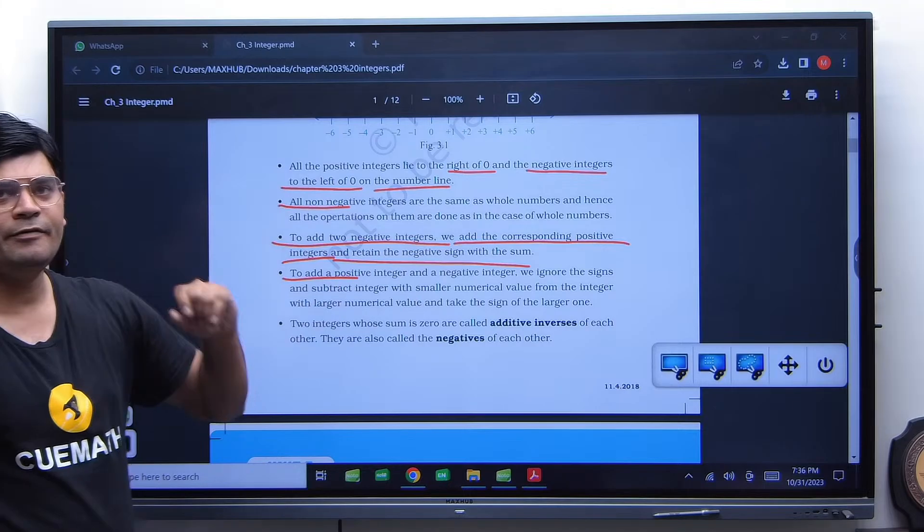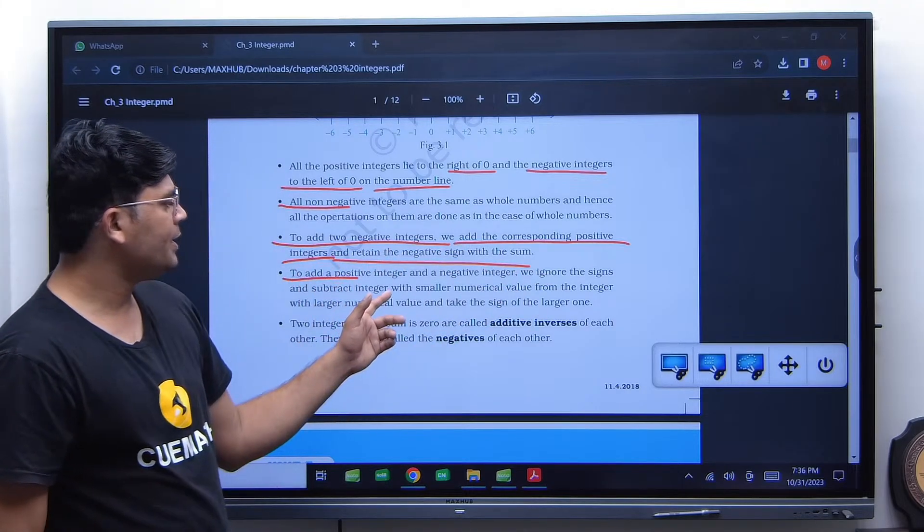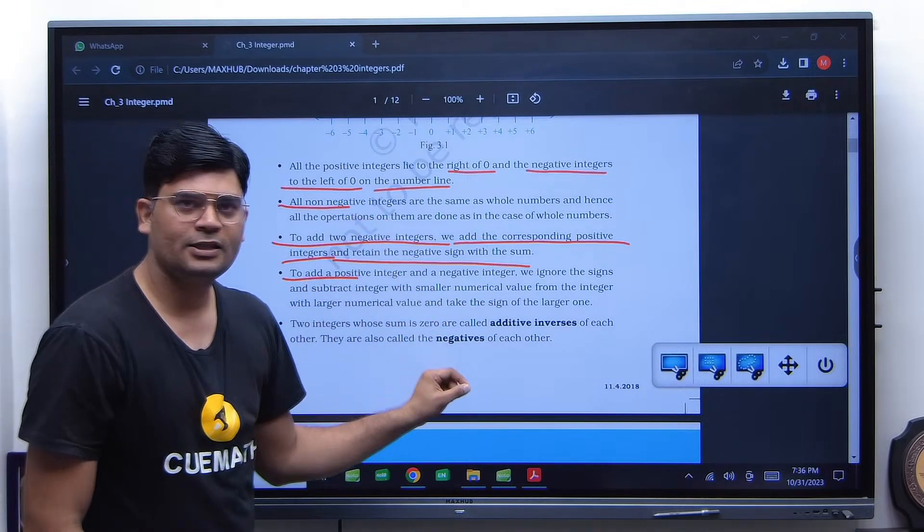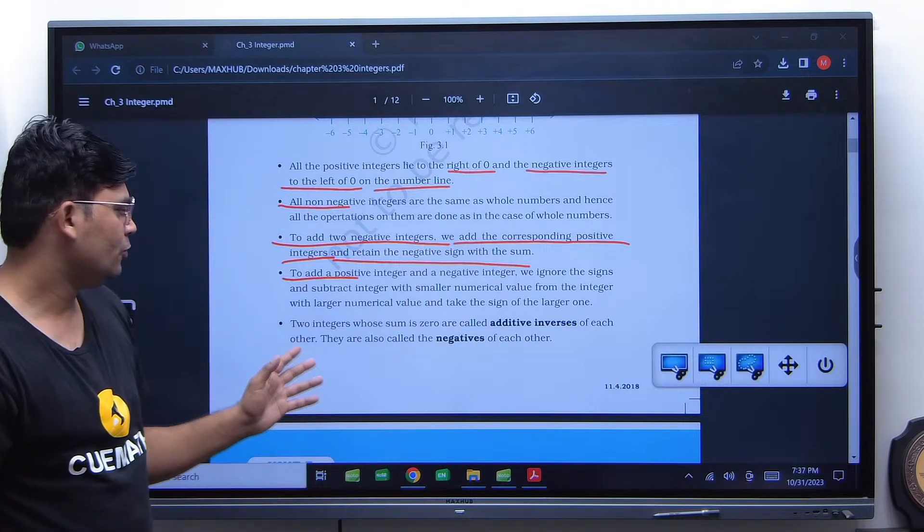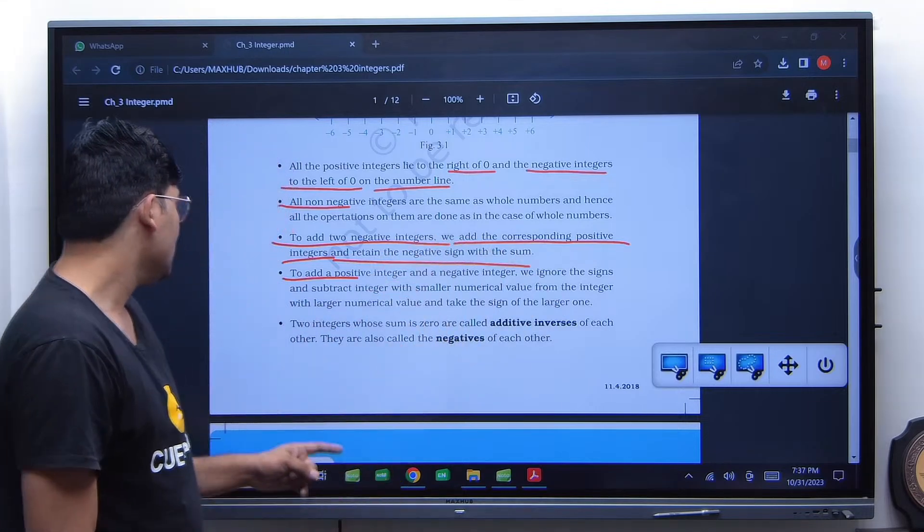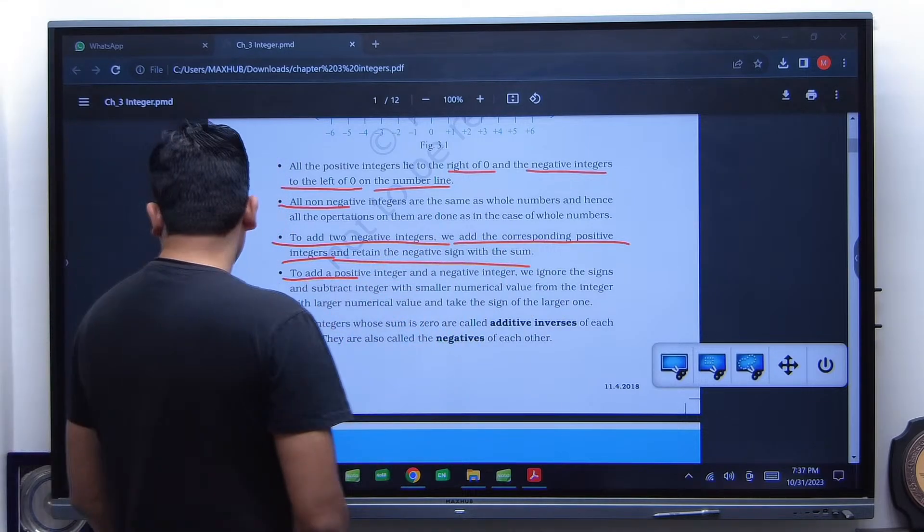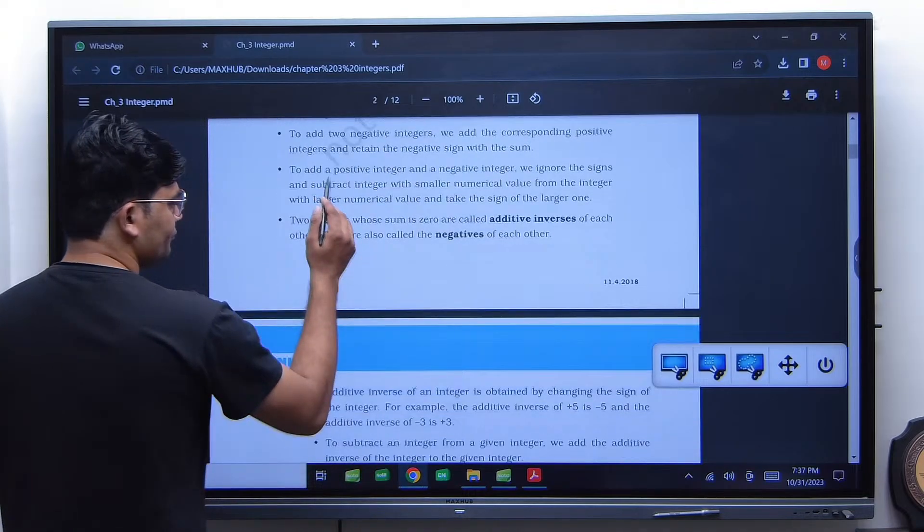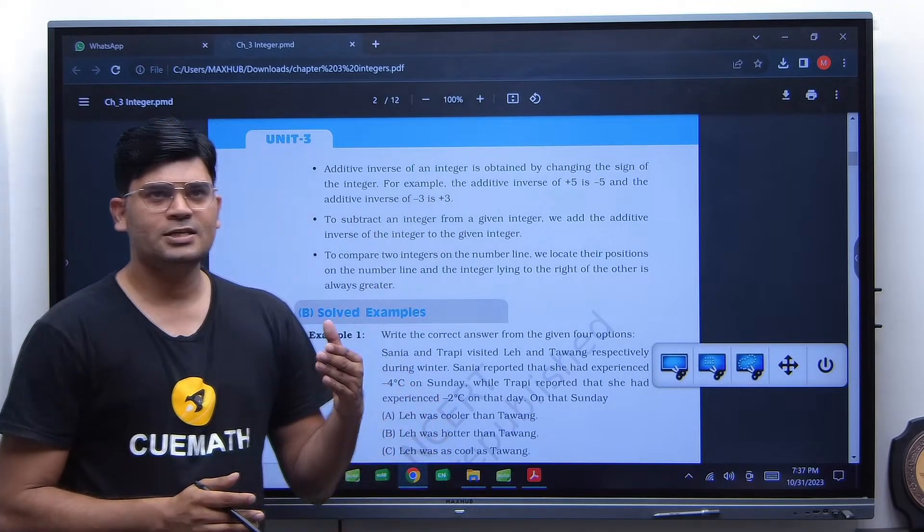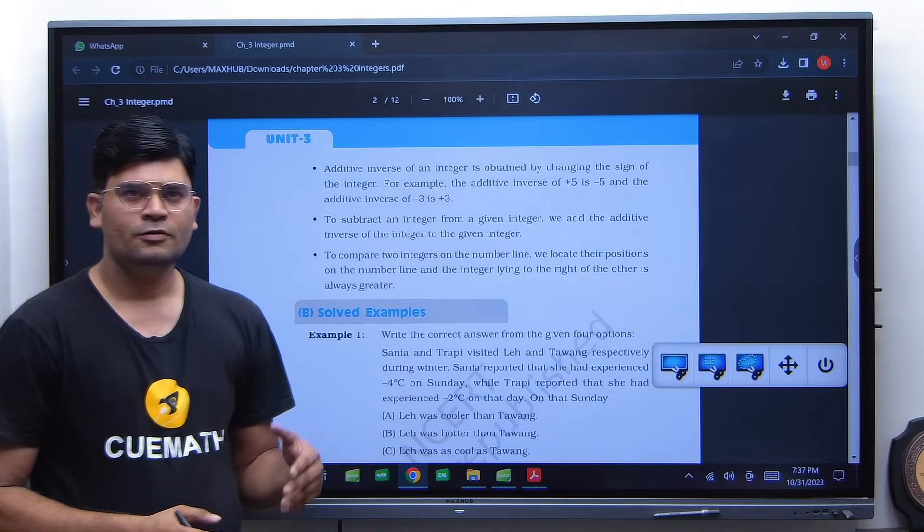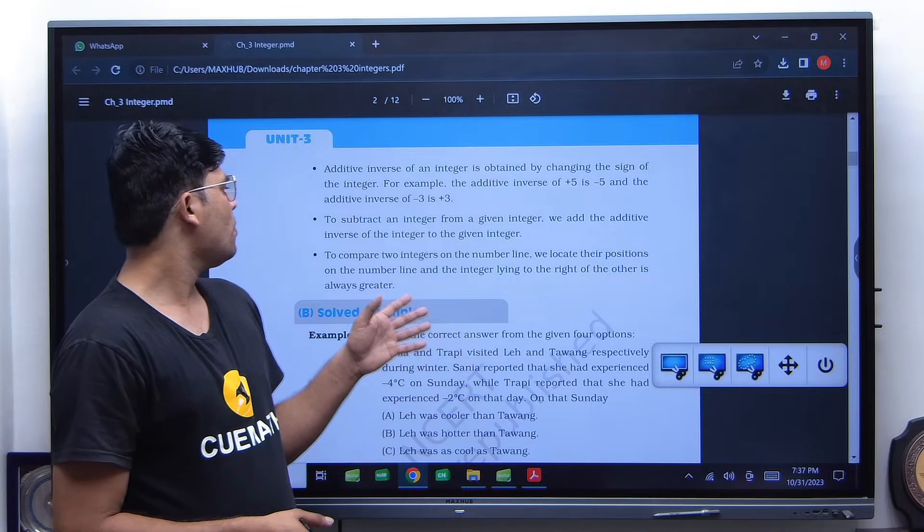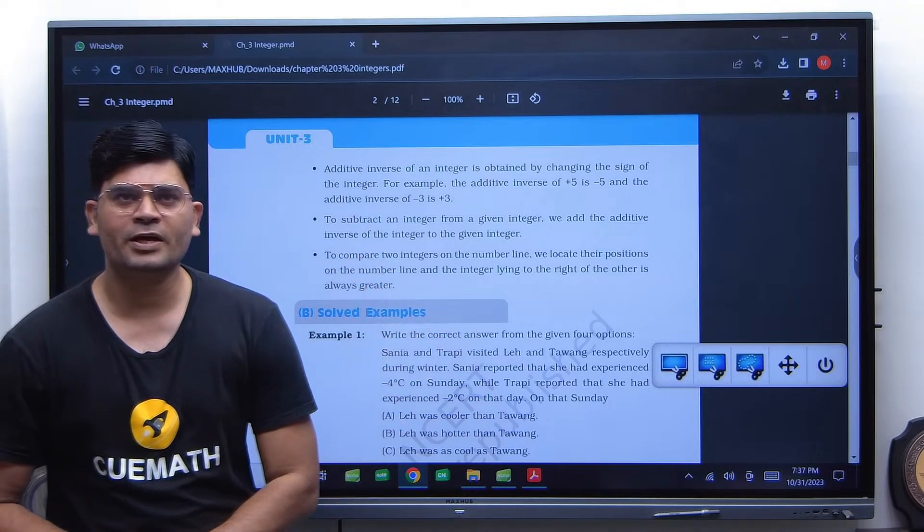The integer with the smaller numerical value from the integer with the larger numerical value and take the sign of the larger number. I have already taught you. Two integers whose sum is zero are called additive inverse of each other. They are also the negative of each other. Additive inverse of an integer is obtained by changing the sign of the integer. For example, the additive inverse of 5 is minus 5 and that of minus 3 is 3. To subtract an integer from a given integer, we add the additive inverse of that number.